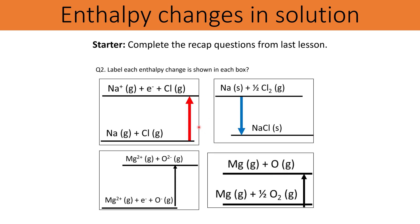Next up we need to associate an enthalpy change with each of these arrows — these are parts of a Born-Haber cycle. In the first example you can see that the only change is sodium gaseous atoms forming 1 plus sodium gaseous ions, so what we're looking at here is the first ionization energy of sodium.